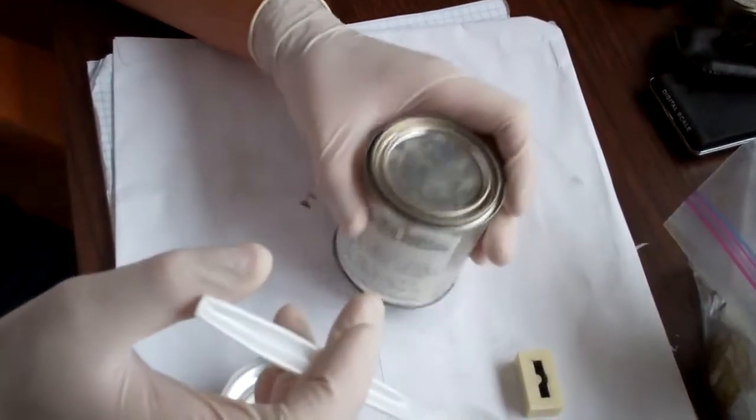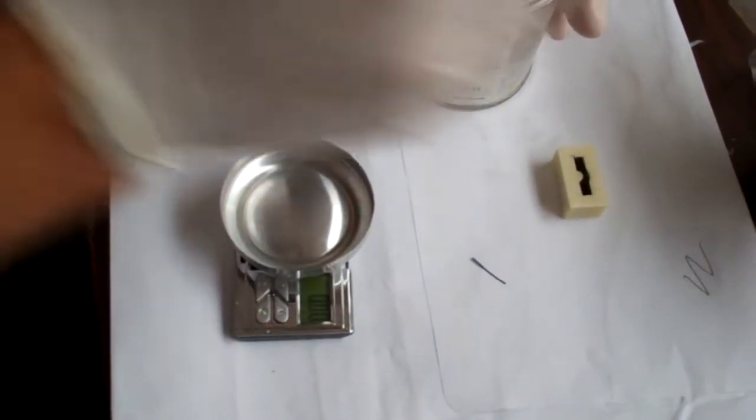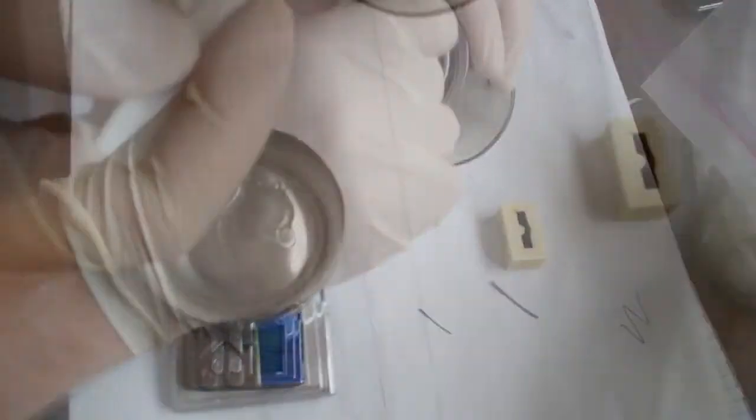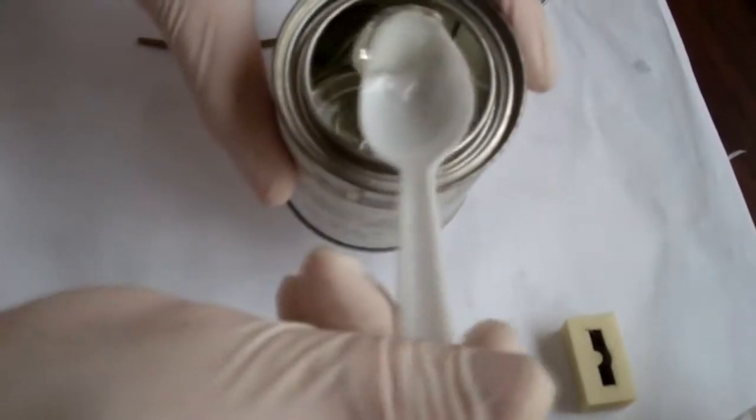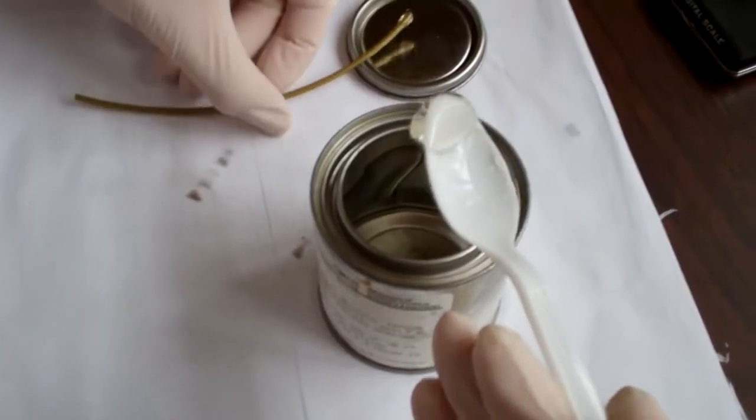So now what we're going to do is we're going to mix the epoxy. We would want two grams of this and then two grams of this one. Okay, so we're going to put, instead of one of each, we're going to put in two grams of each.